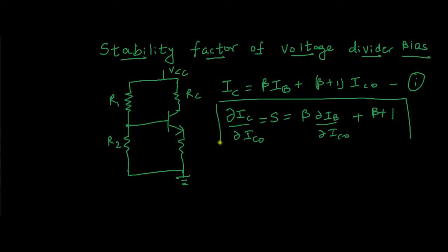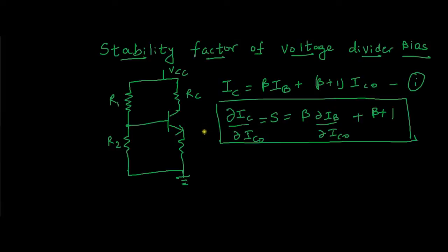Now we need to apply KVL to this voltage divider circuit to find δIB/δICO. We need to modify the equation so that we get the stability factor S totally in terms of resistance. We will first draw the Thevenin circuit for this voltage divider bias so that it will be easy to calculate the KVL equations.